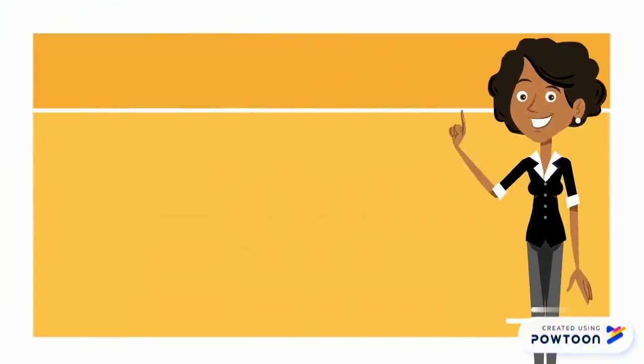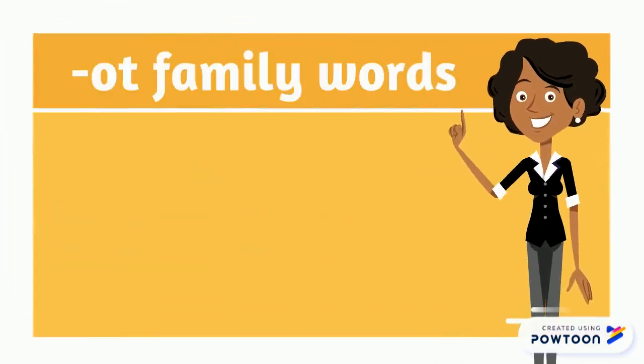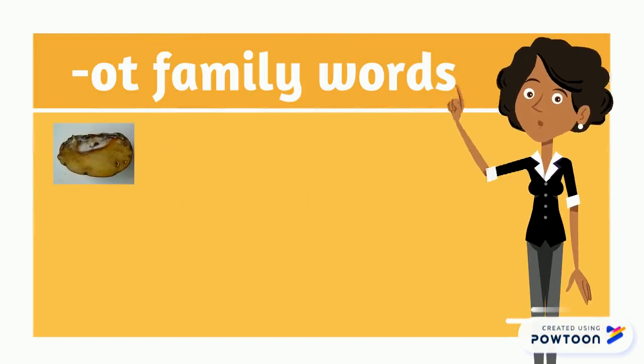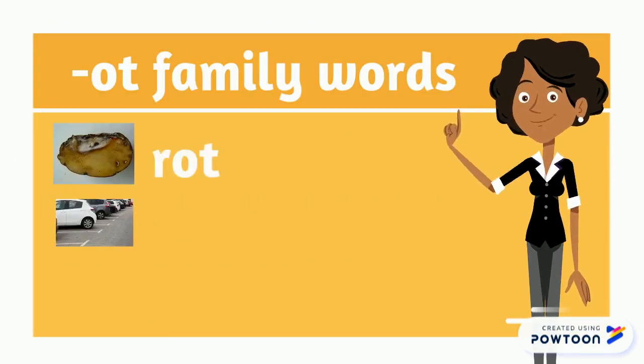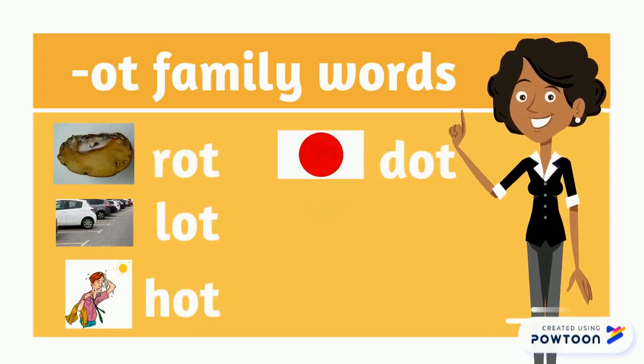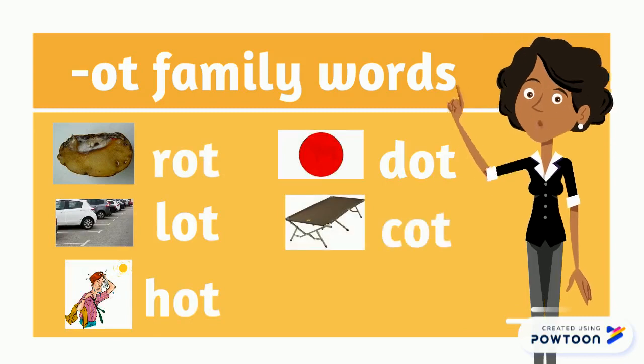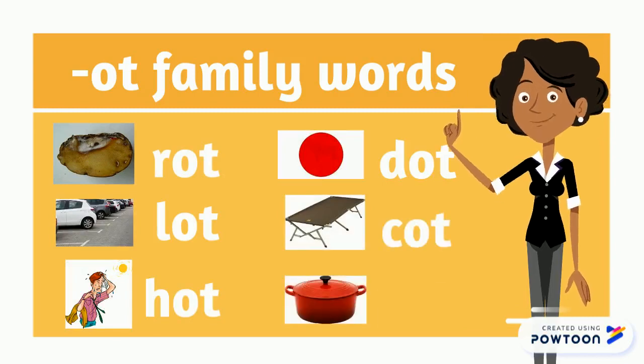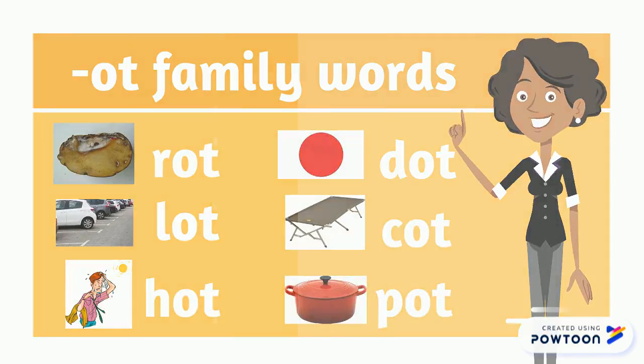Let's review Ott family words. Rot. Lot. Hot. Dot. Caught. Pot.